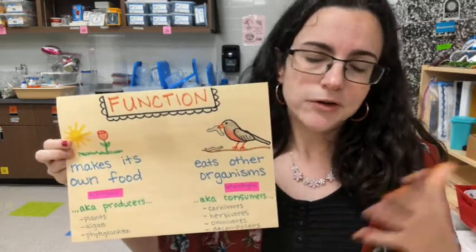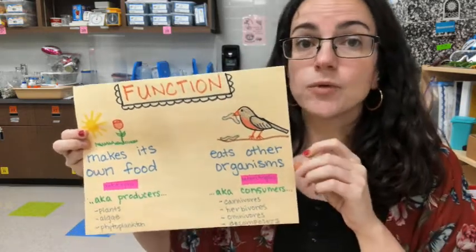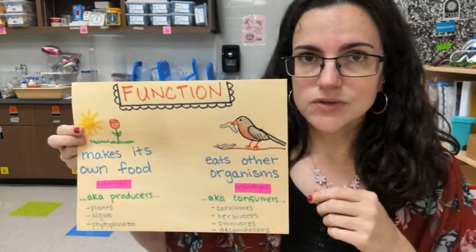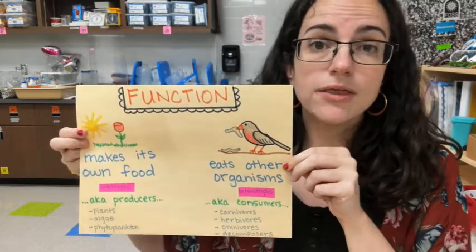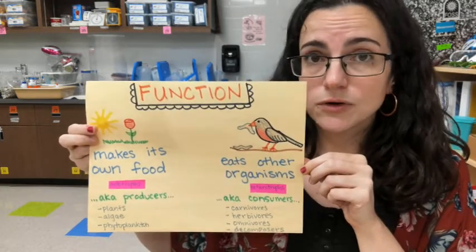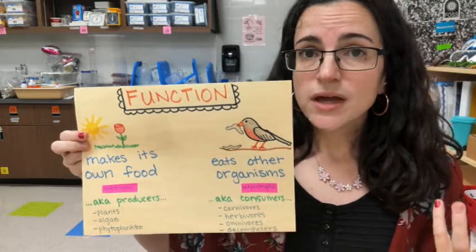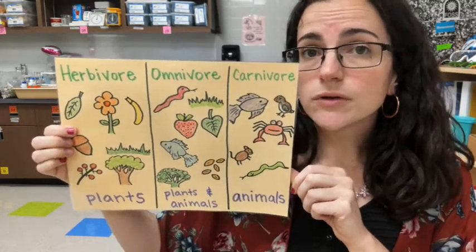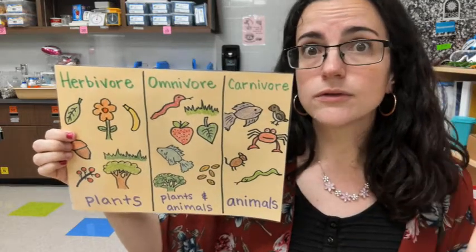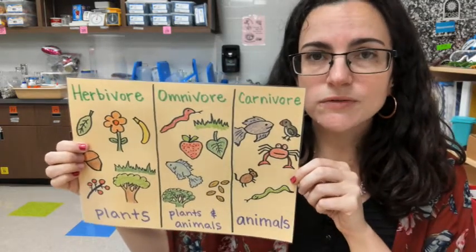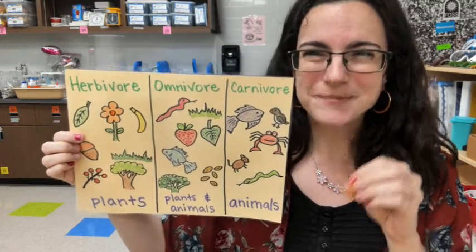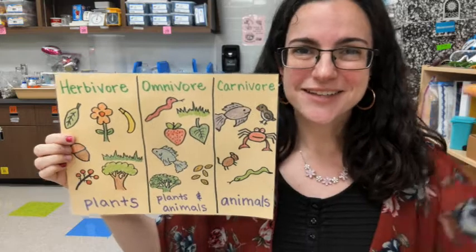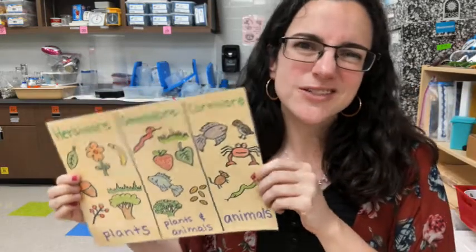And then if an animal or a living organism has to rely on another living organism to eat to gain that energy, we would call that a heterotroph, also known as a consumer. Different examples of consumers might be a decomposer, an herbivore if they eat only plants, a carnivore if they eat only meat, or an omnivore if they eat both meat and plants. Us as humans, we are omnivores, unless you make the choice to eat one or the other.